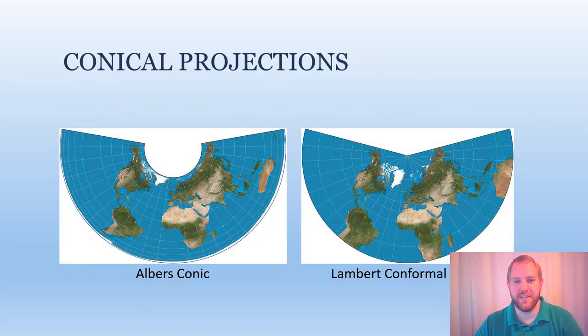Conical projections such as these are a little less common for worldwide maps. They are more common for land masses that are wider than they are long, like a map of North America or Asia.